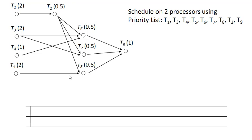Okay, so we're going to schedule this digraph on two processors using this priority list, and what we're using here is the list processing algorithm, which allows us to use a priority list to create a schedule.